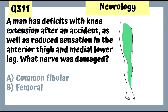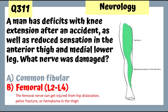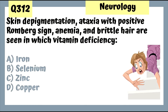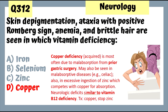Question 311: A man with knee extension deficits after an accident and reduced sensation in the anterior thigh and medial lower leg — the femoral nerve was damaged. The femoral nerve can be injured from hip dislocation, pelvic fracture, or a thigh hematoma; it comes from L2 to L4. Question 312: Skin depigmentation, positive Romberg sign, anemia, and brittle hair are seen with copper deficiency, most often due to malabsorption from prior gastric surgery. Treat with copper and stop taking zinc — too much zinc can cause copper deficiency.